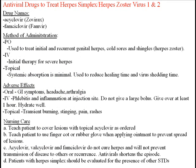Now we move on to drugs that are antiviral for herpes simplex and herpes zoster virus 1 and 2 treatment. The two drugs within these categories are acyclovir and famciclovir. Methods of administration include by mouth (PO), used to treat initial and reoccurring genital herpes, cold sores, and shingles (herpes zoster). At first sign of an outbreak, the patient should take as ordered and continue until the lesions go away — this regimen should greatly diminish the severity of an outbreak.